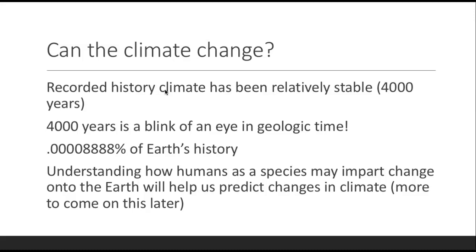In the next few chapters, we'll get into understanding how humans — how we as a species — may impart change onto the Earth, and that will help us predict the climate changes we are causing to accelerate. The world has gone through warming and cooling periods before, but never at the rate we've seen from drilling into the Earth, taking out cores, and looking at how atmospheric carbon has changed. We are heading toward man-made climate change. Climate change is a big political buzzword, but scientifically there is no doubt that humans are having a huge impact. Let me know if you have any questions on this lecture — I'll see you in the next one.